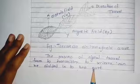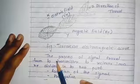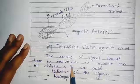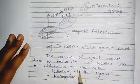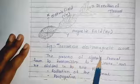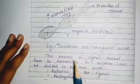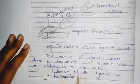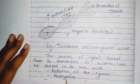The first point is that the process of a signal travelling from transmitter to receiver can be divided into two parts: first is the radiation of the signal, and second is the propagation of the signal.